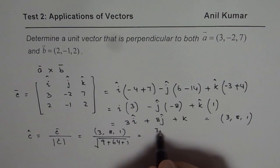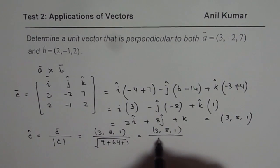So that is what you get. So it is vector (3, 8, 1) divided by square root of 74.